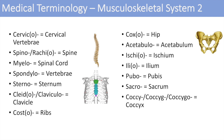The next one is coccyge or coccygeo, which denotes the coccyx. The coccyx is the ending of the vertebral column — a little bony tail-like projection that projects off of the sacrum. Then the next one is crur, which denotes the leg. And finally, femoro, which denotes the femur — you can think of the femoral artery.